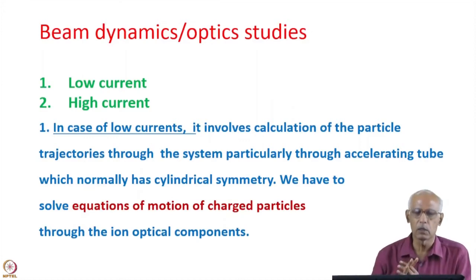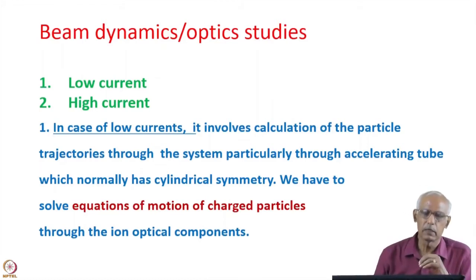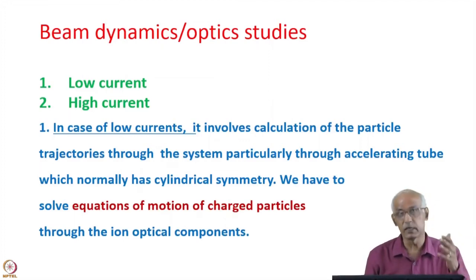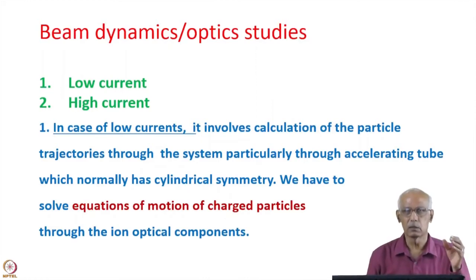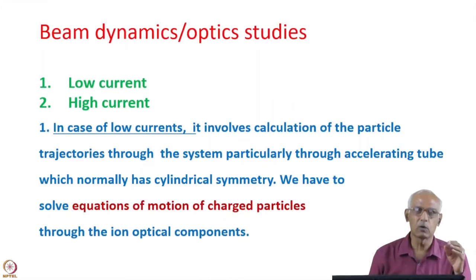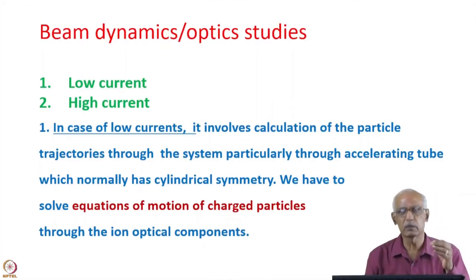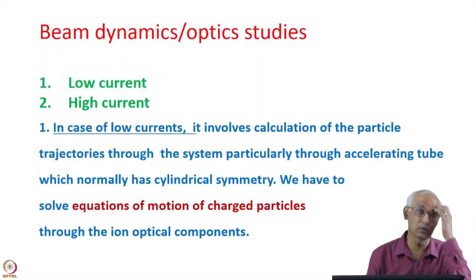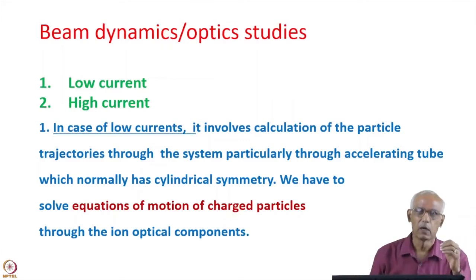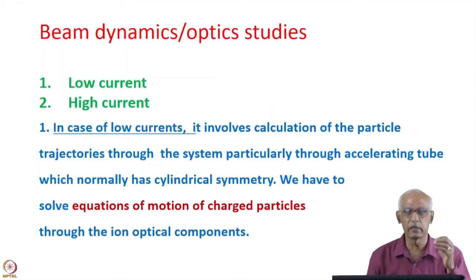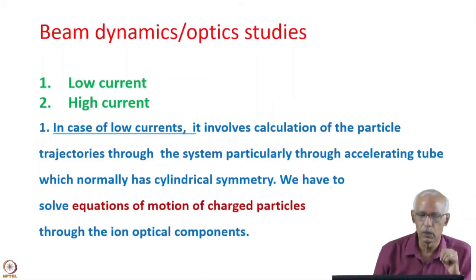So far we were talking about particle trajectories. Now there are two kinds of accelerators. One is called low current accelerators where we get low currents at the output, and the other one is called high current accelerators. There are many applications where high currents are required — for example, for nuclear physics experiments low currents are good enough, while in cases like accelerator driven systems high currents are required because the number of neutrons produced and hence the power generated is proportional to the current.